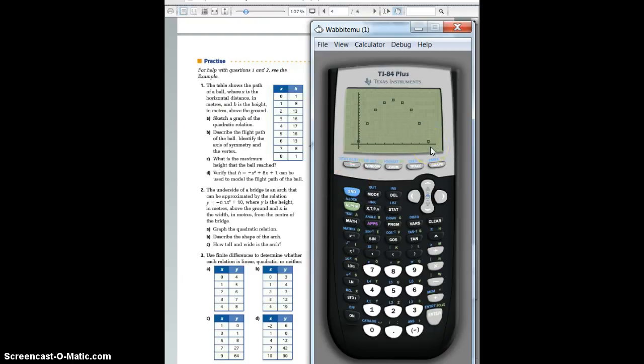Now, as you can see in the question, it says sketch a graph of the quadratic equation, so we've finished part A. Okay, now if we do part B, describe the flight path of the ball, identify the axis of symmetry and the vertex.